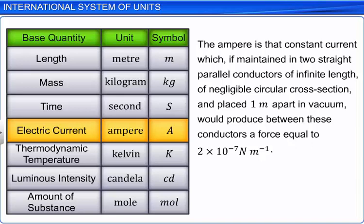...of negligible circular cross-section and placed 1 meter apart in a vacuum, would produce between these conductors a force equal to 2 multiplied by 10 raised to the power minus 7 newton per meter length of the conductor.